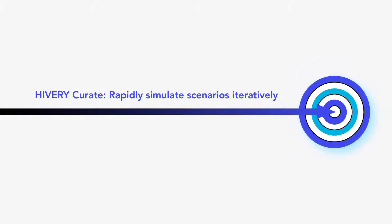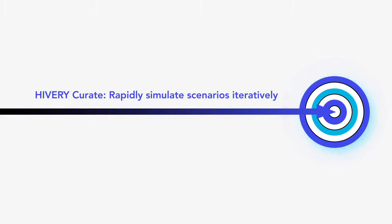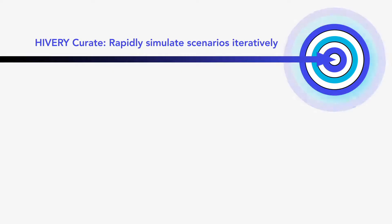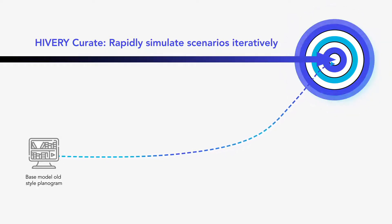You start with your category goal in mind. Do you need to grow revenue or grow volume, or a combination of both? Upload your current planograms to Hivory Curate. This is your base model. It represents planograms in stores today and projects the revenue or volume for that base model.